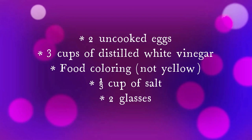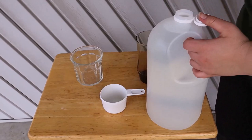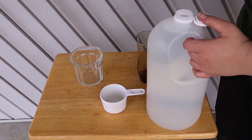For this experiment, you will need two uncooked eggs, three cups of distilled white vinegar, food coloring (make sure you don't use yellow), one-third cup of salt, and two glasses. The first step is to pour three-fourths cup of vinegar into each glass.